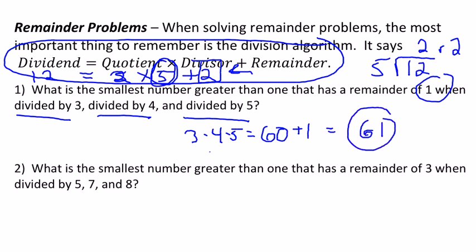61 divided by 3 gives you 20 remainder 1, divided by 4 is 15 remainder 1, divided by 5 is 12 remainder 1. Okay, so for problem 2, we do the same thing.